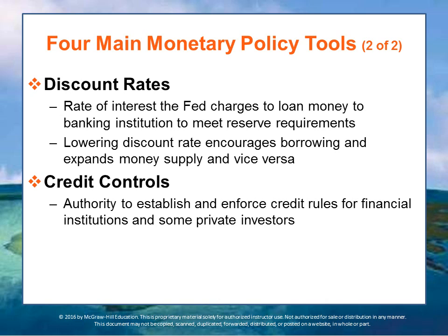The third monetary policy tool is the discount rate — the rate of interest that the Fed charges to loan money to any banking institution that needs it in order to maintain its reserve requirements. For example, if a bank has just made a large loan to an industrial firm and needs capital in its vault, it can borrow from the Fed. There's an overnight rate associated with that borrowing, and as long as the bank holds that money, it has to pay the Fed — that's what's referred to as the Fed discount rate.